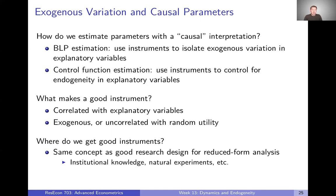Let's talk first about what makes a good instrument. A good instrument in our setting is exactly the same as a good instrument in an OLS model. It's going to be a variable that's correlated with explanatory variables but is exogenous — meaning uncorrelated with the random unobserved utility term. We need both of these properties to be satisfied. As for where we get good instruments — it's basically the same concept as thinking through good research design in a reduced form analysis.